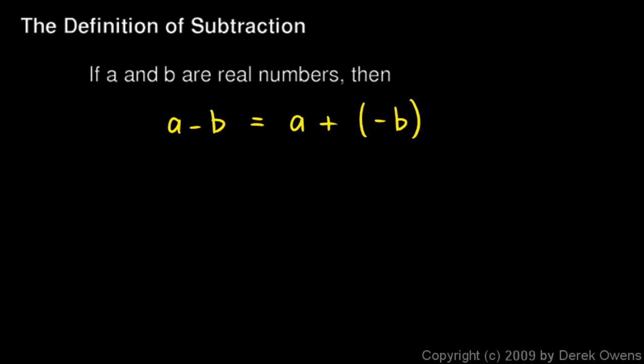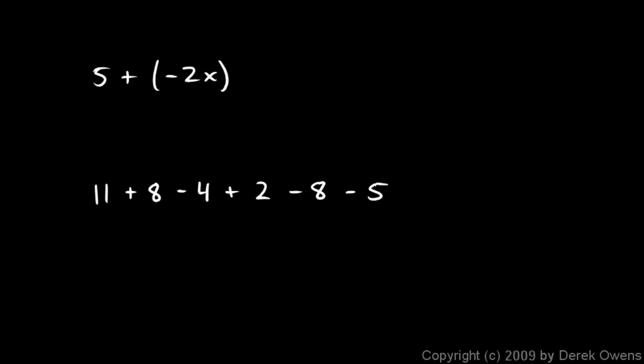And this actually results in some practical techniques for evaluating and simplifying expressions. Let's look at some examples here. 5 plus negative 2x could be written more simply as 5 minus 2x. And that's how it would commonly be written. Instead of saying 5 plus negative 2x, we realize that adding negative 2x is the same as subtracting 2x.